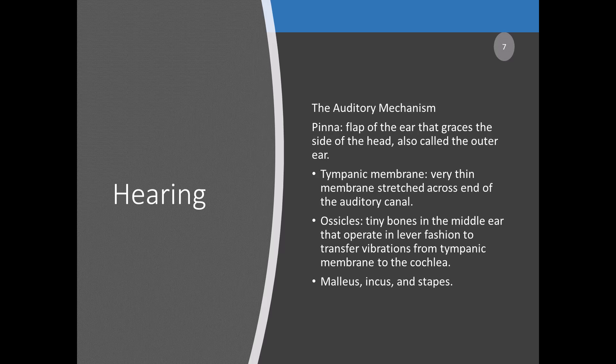The tympanic membrane is a very thin membrane stretched across the end of the auditory canal. Its vibrations transmit sound energy to the three middle ear bones, or ossicles. It separates the outer and middle ear and is also called the eardrum. There are muscles that can stretch the eardrum tighter or loosen it to adjust sensitivity to changing sound levels.